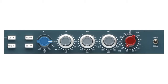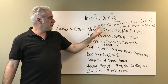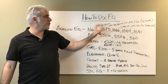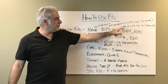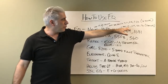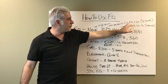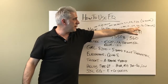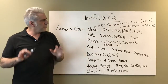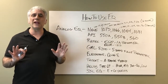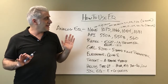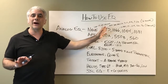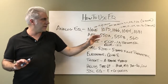The Neve 1066 EQ has the same mic pre as the 1073 but with five mid-range points. The low frequencies are still 35, 60, 110, and 220 Hz. The mid range is at 700 Hz, then 1.2k versus 1.6k, 2.4k versus 3.2k, 3.6k, and 7k versus 7.2k — slightly different points. It's great if you're able to have both for tracking, letting you use different EQ points on different instruments.